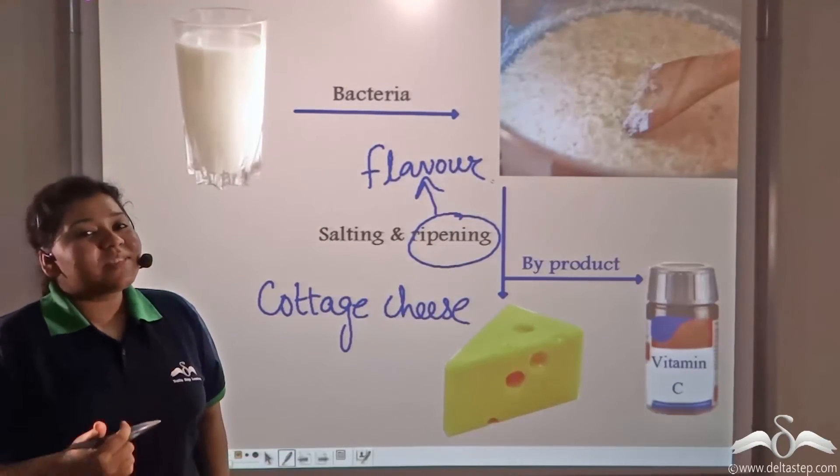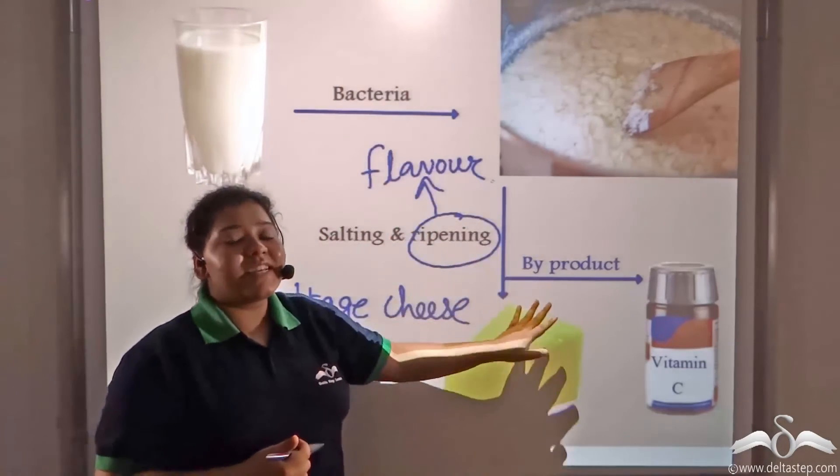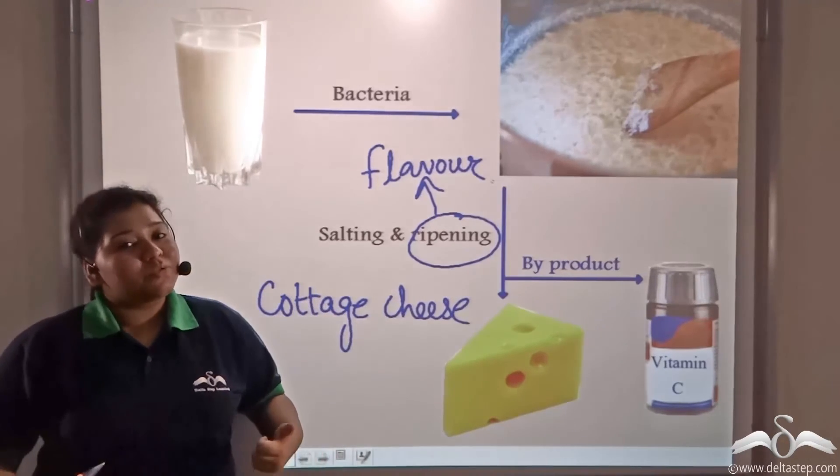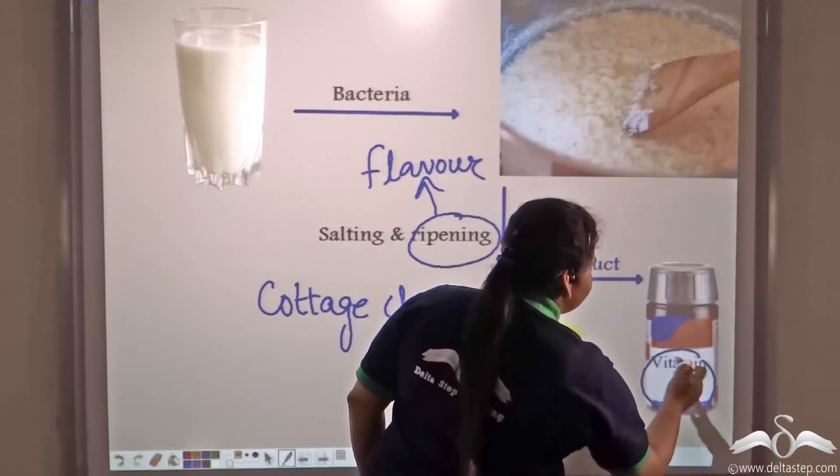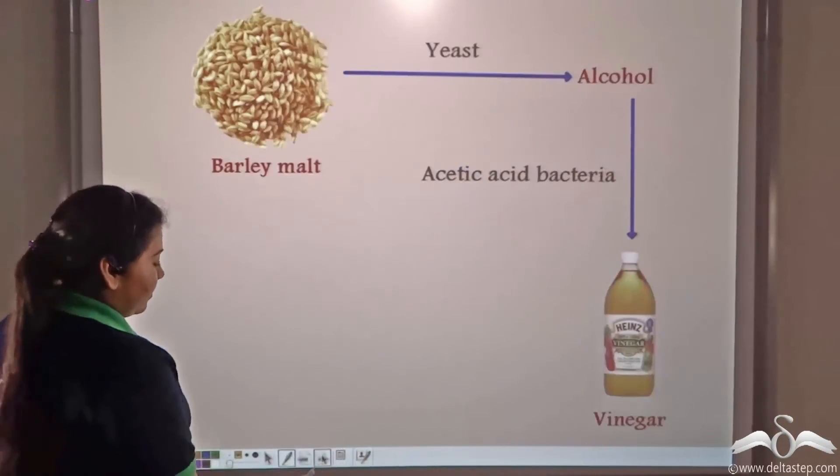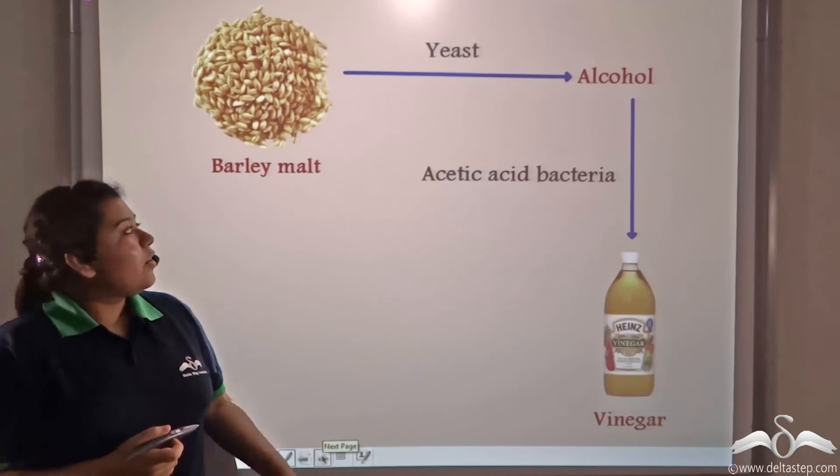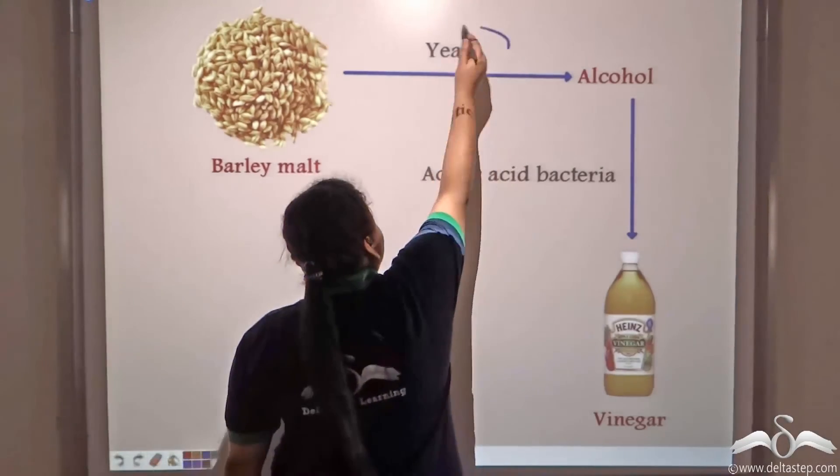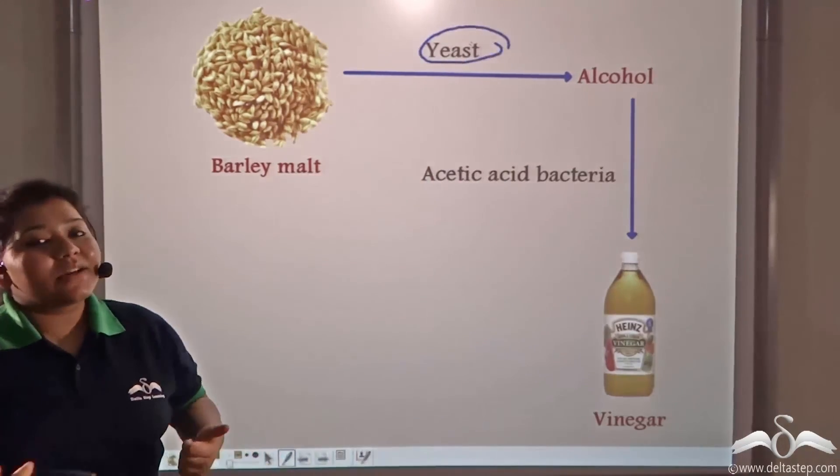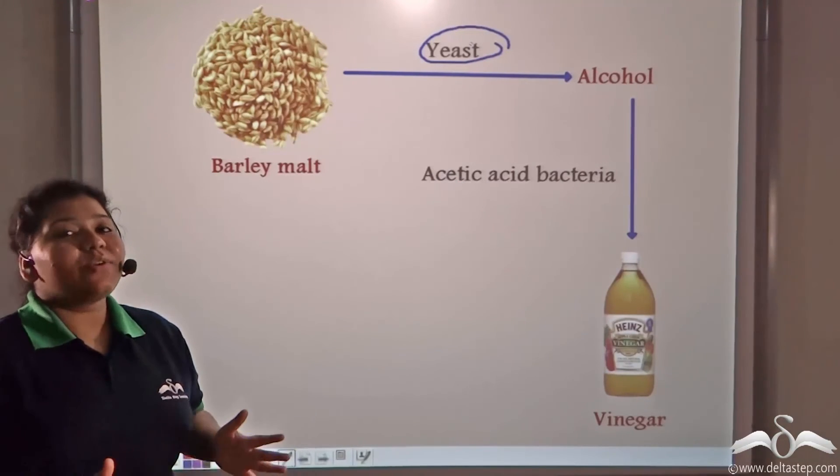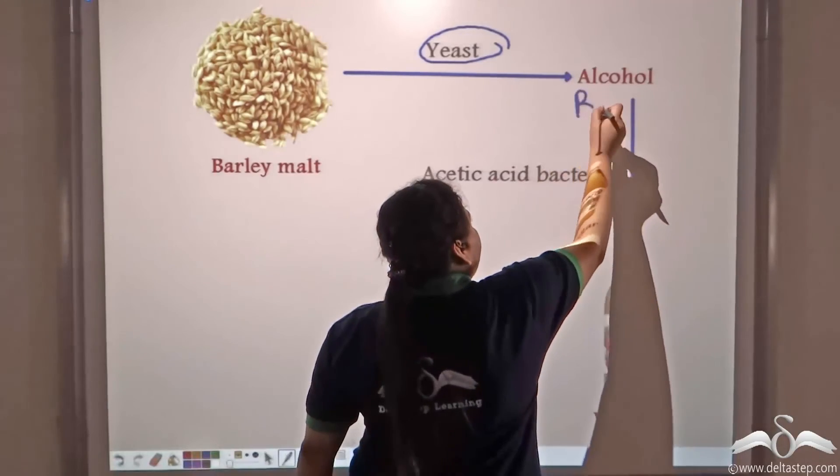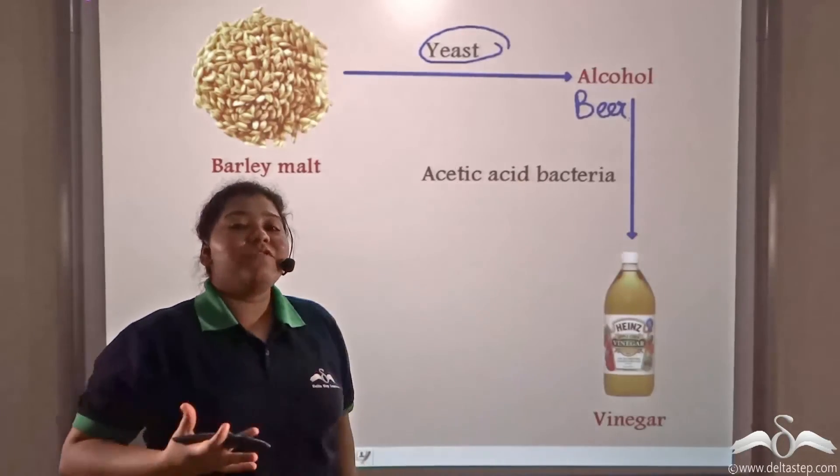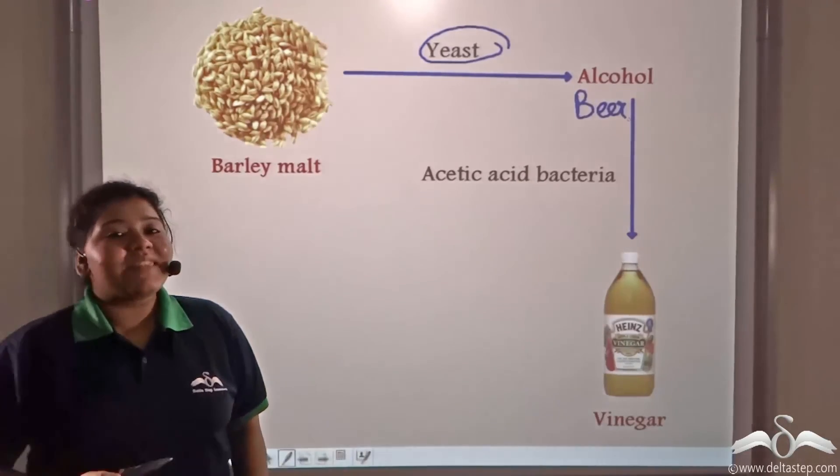By this two-step process, milk gets converted to cheese and a by-product is formed which is also very useful to mankind, and that is vitamin C. Now, barley malt can be acted upon by another microorganism known as yeast which converts it to alcohol. When this alcohol such as beer is acted upon by acetic acid bacteria, it forms vinegar which is used commonly in cooking.